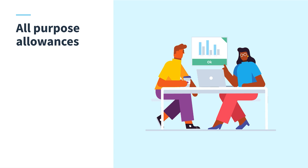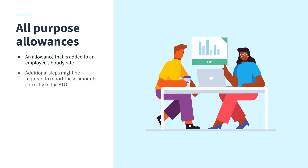If you pay your employees allowances, particularly all-purpose allowances as part of an award, you may need to take additional steps to ensure you are reporting correctly to the ATO. You can find more information on Xero Central to determine if this applies to your business.